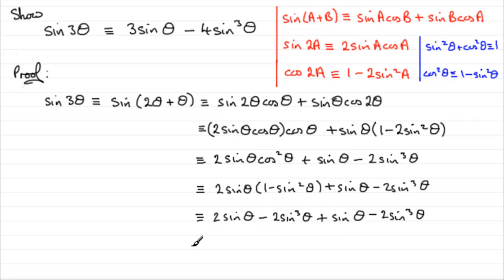We have 2 sine theta plus this sine theta, which is 3 sine theta. And then we have minus 2 sine cubed theta minus that 2 sine cubed theta gives us minus 4 sine cubed theta. And there you have it. Okay? Proved.